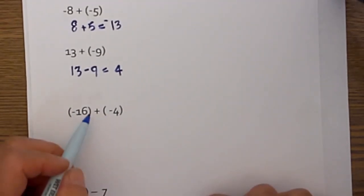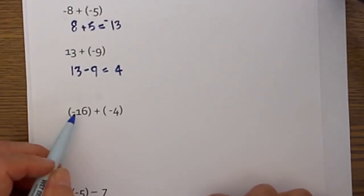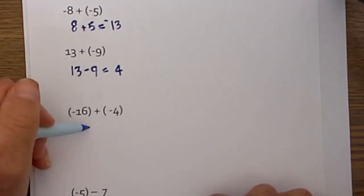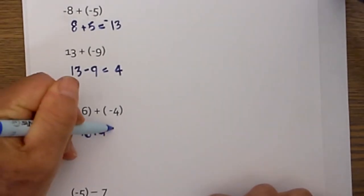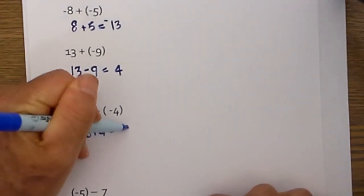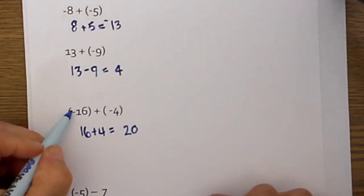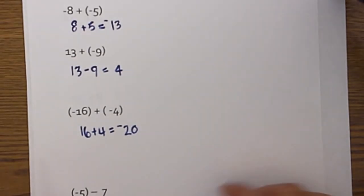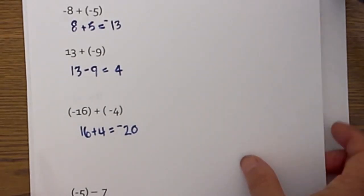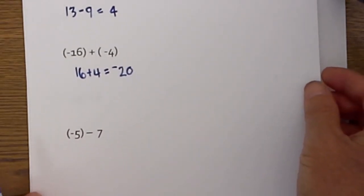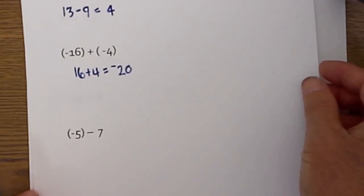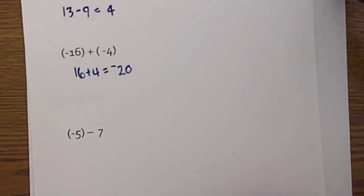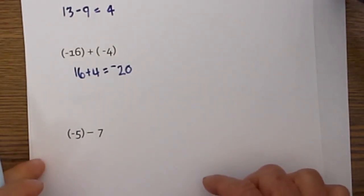Let's apply the flowchart again. Is the problem addition? Yes. Are the signs the same? Yes — just add the two numbers together. 16 plus 4 is 20, and then take the sign of the two numbers, which gives negative 20. As you can see, it takes a lot of the guesswork out and cuts down on mistakes.